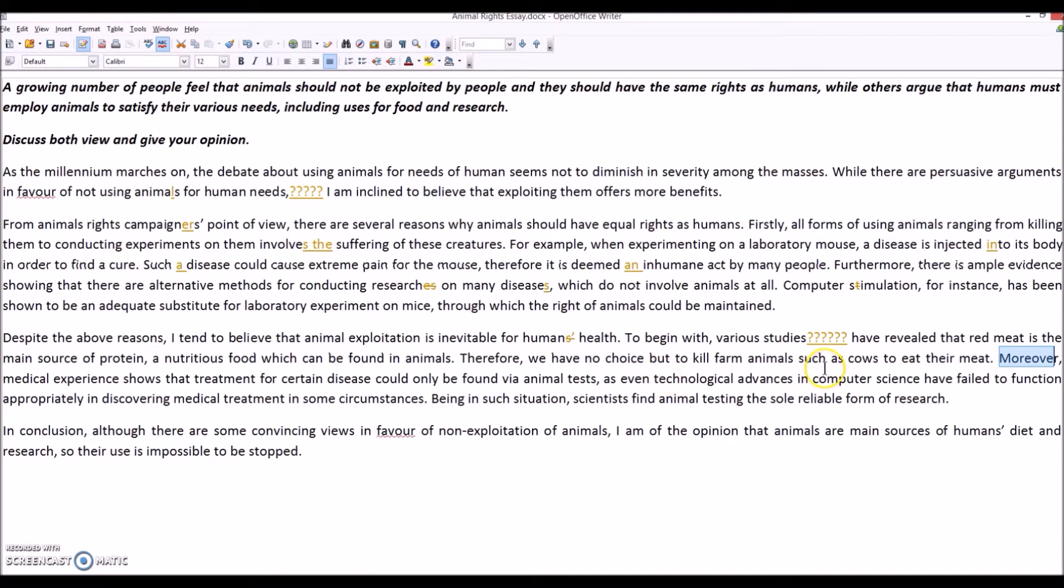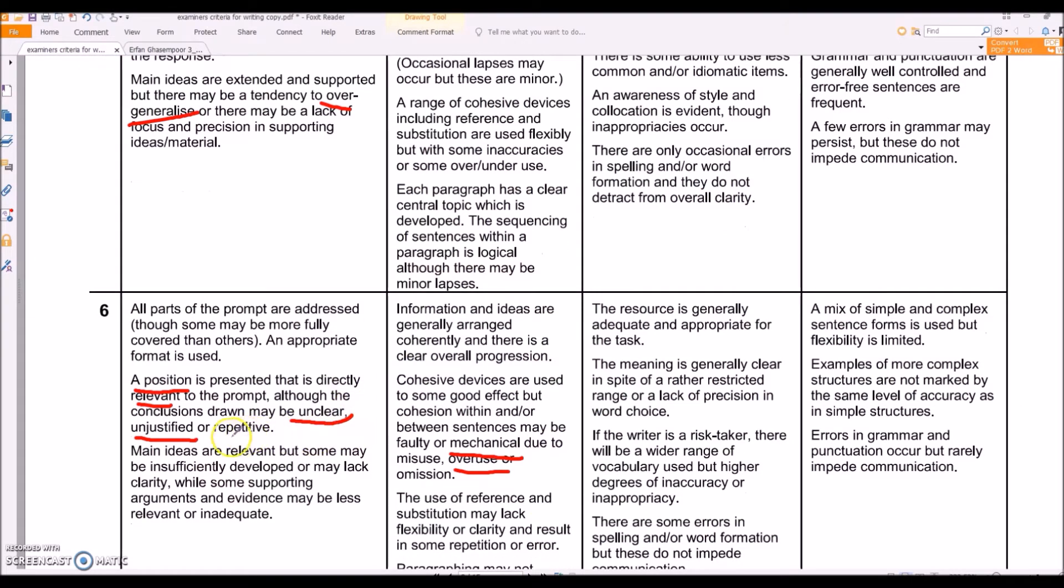Red meat is a main source of protein and nutritious food which can be found in animals. Well it's a part of the food. Therefore we have no choice but to kill farm animals such as cows to eat their meat. Therefore, well some might argue that that's not strictly a logical consequence. But again it's a little general. And you've got to watch these discourse markers: despite the above, to begin with, therefore, moreover.